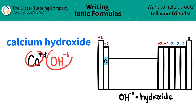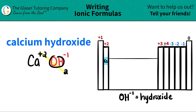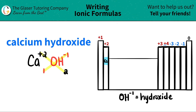Now since I have both components and both charges, we use the criss-cross trick — we take the charges and criss-cross them to determine how many of each we need. The plus 2 criss-crosses down telling me I need 2 hydroxides, and the negative 1 criss-crosses down telling me I need 1 calcium. You can then scribble out the charges because they were only used to get the subscript numbers — you don't write the negative or positive signs.